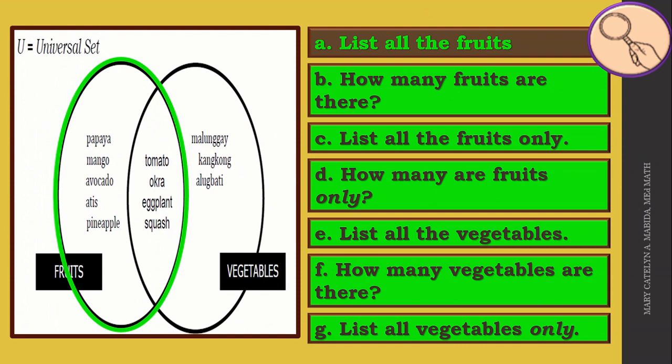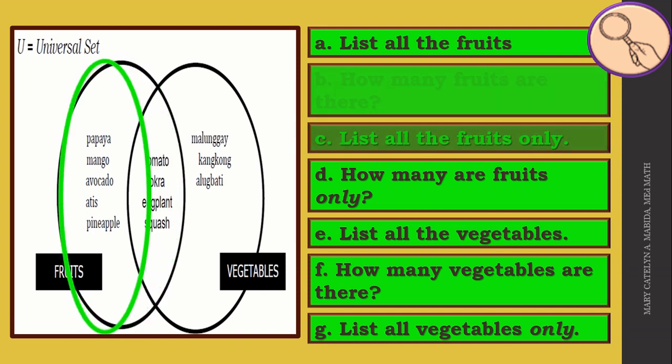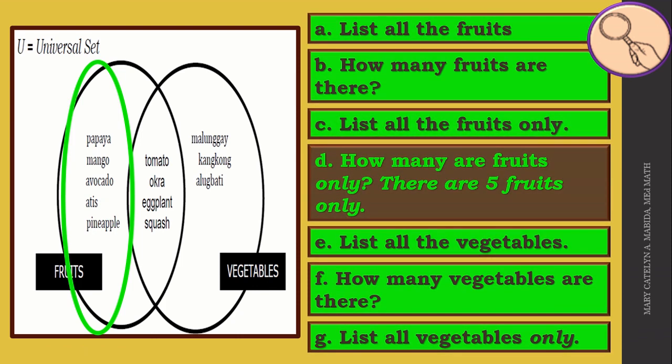List all the fruits. The fruits are papaya, mango, avocado, atis, pineapple, tomato, okra, eggplant, and squash. Now how many fruits are there? There are nine fruits. List all the fruits only. That would include papaya, mango, avocado, atis, and pineapple. And how many are they? There are five fruits only.